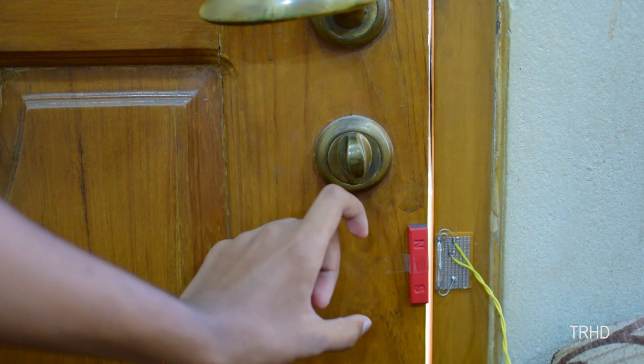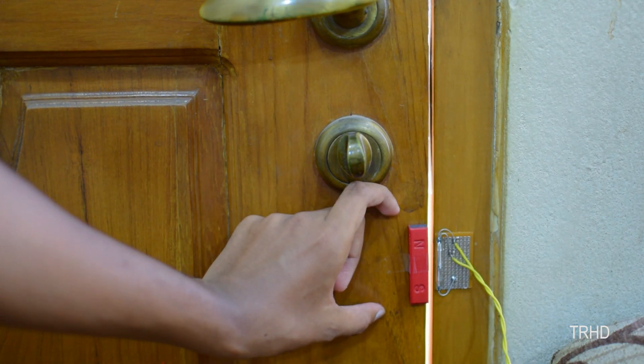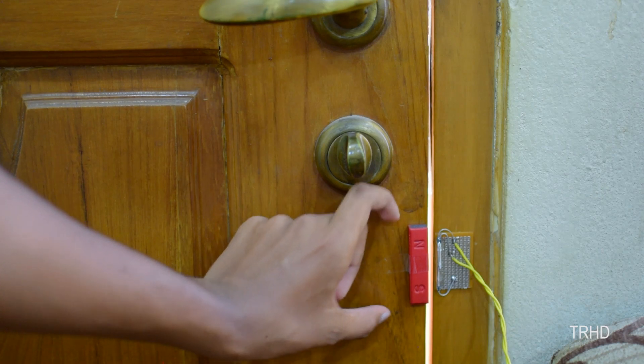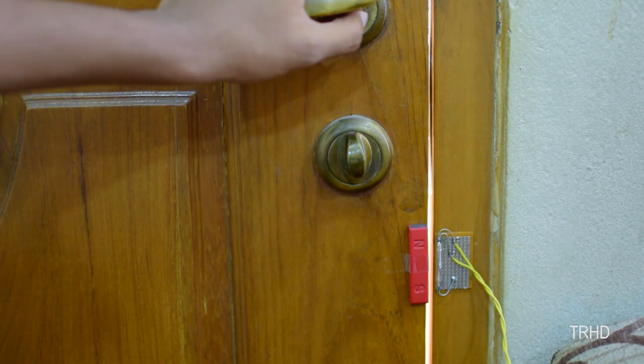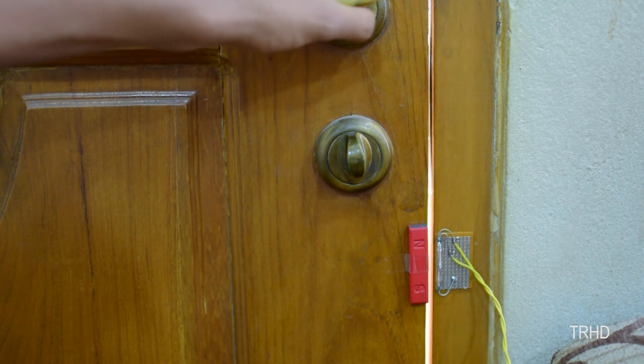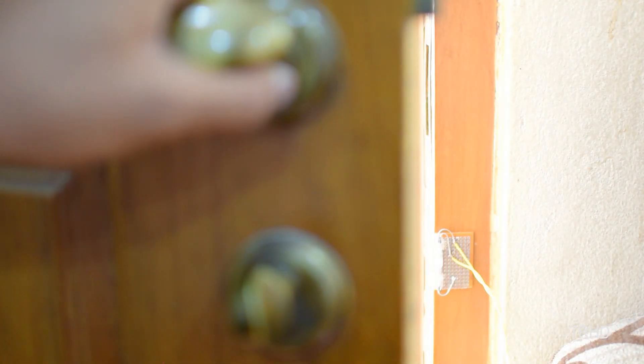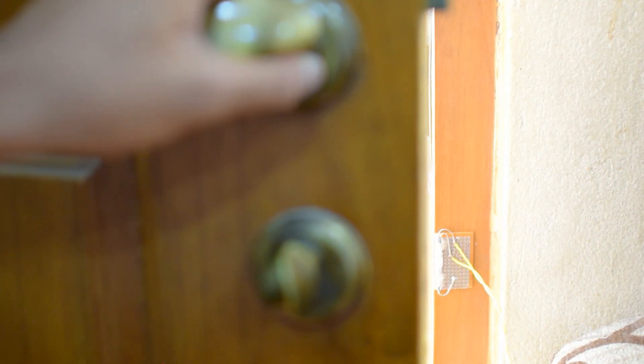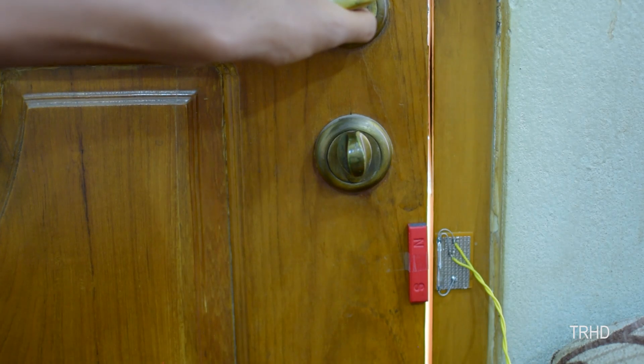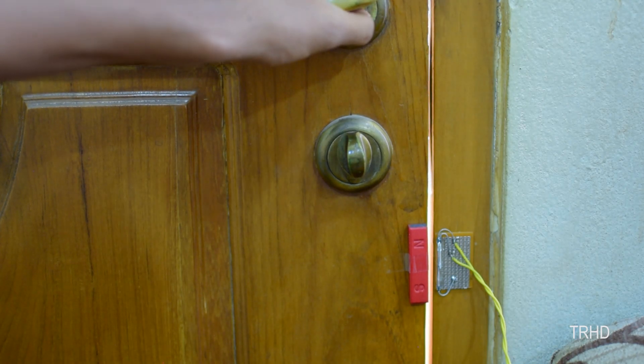You can fix the reed switch and the magnet to the door wherever it is comfortable to you. I have fixed it here. You can see this thing is. Now, if someone tries to open the door like this, you can see the alarm has triggered. Even if you close the door, the alarm won't go off. You have to reset it using the switch.